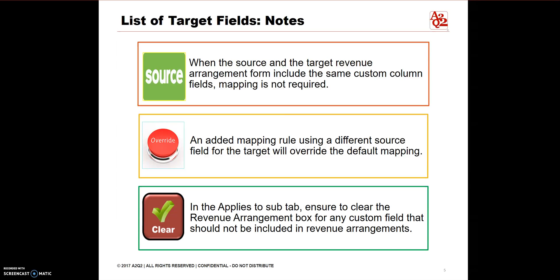Remember, when the source and the target revenue arrangement form include the same custom column fields, mapping is not required. If you add a mapping rule that uses a different source field for the target, the mapping rule you add overrides the default mapping. Clear the revenue arrangement box in the Applies To sub-tab to be sure that there is no other custom field that should be included.